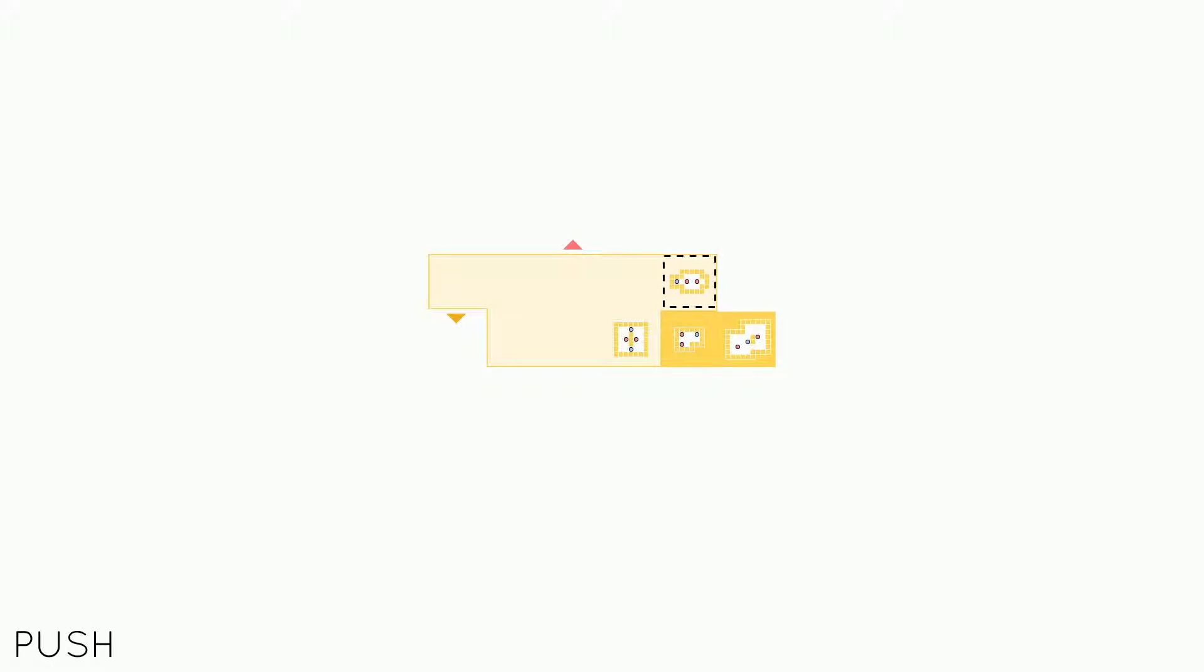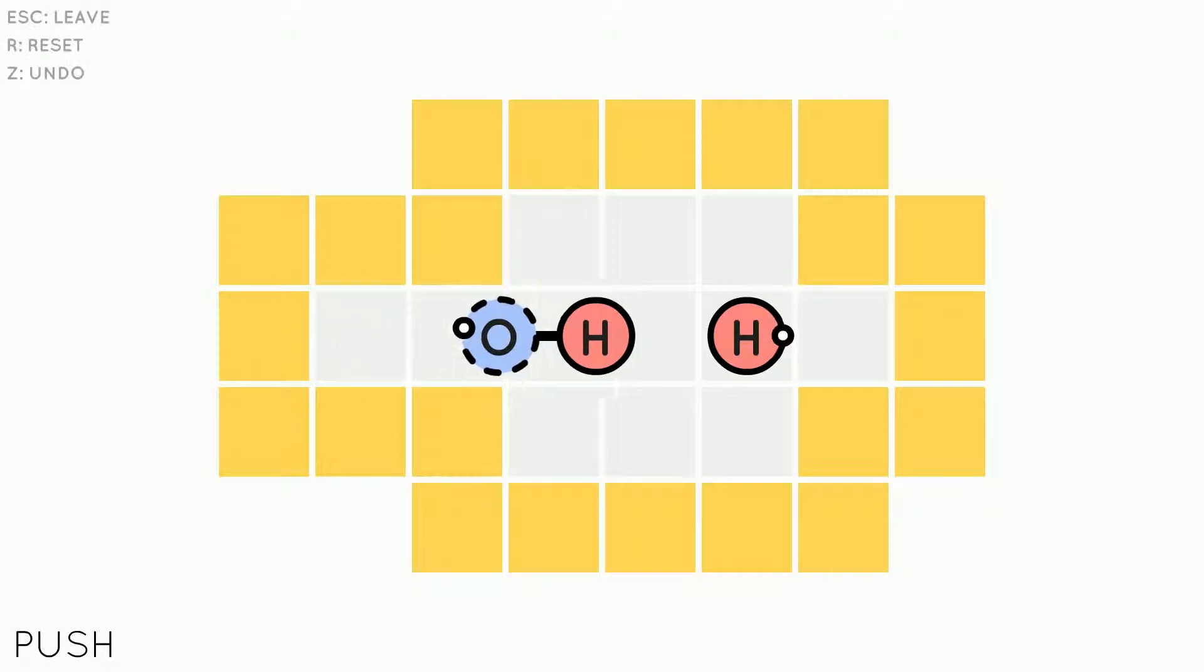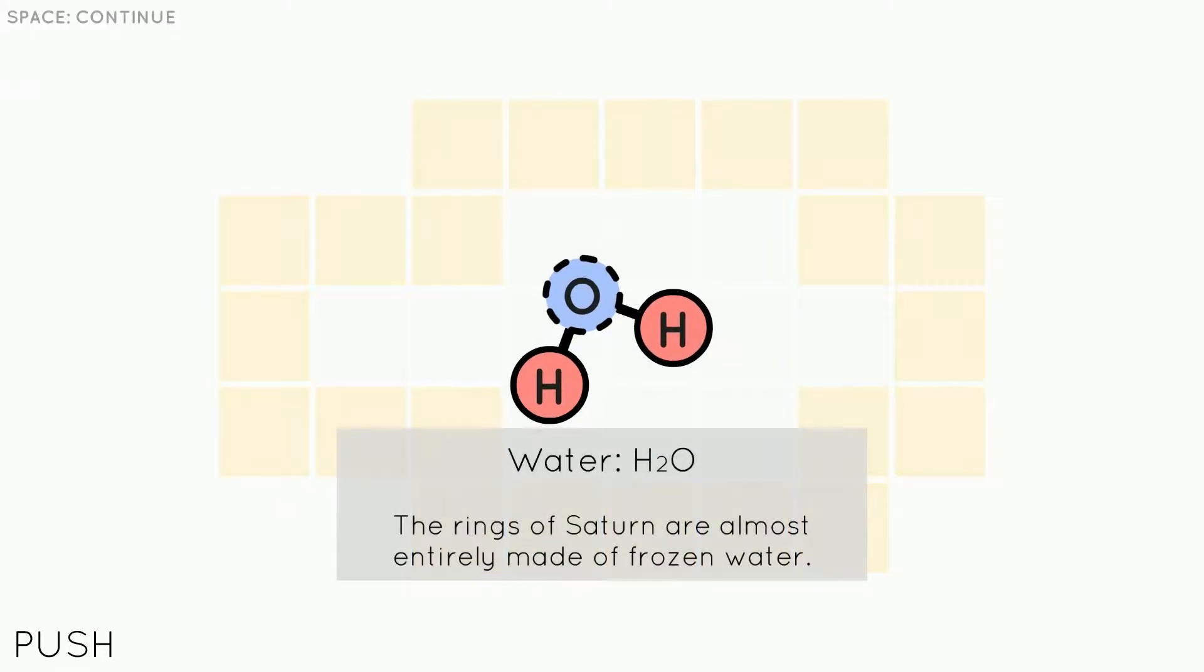Okay now we got multiple options. Ooh, so we can make another water or we can make two hydrogen, two water. H2O2, that's chlorine I think, something like that. Let's do, oh this is a loop. All right, let's try, push this. Oh the rings of Saturn are almost entirely made of frozen water.